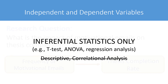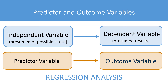Please note that the terms independent and dependent variables are only applicable to inferential statistics such as t-test, ANOVA, and regression analysis. They are not applicable to descriptive studies or correlational studies that do not examine causality between variables. In regression analysis, researchers sometimes use different terms: instead of independent variable, they use 'predictor variable,' and instead of dependent variable, they use 'outcome variable.'